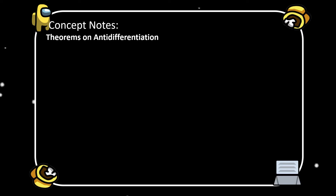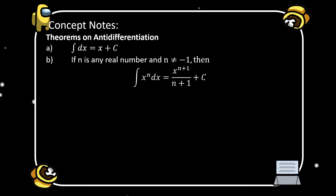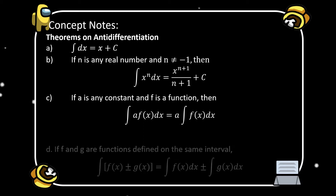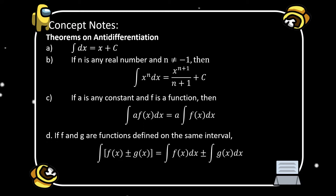We have here the concept notes: Theorems on Anti-differentiation. Theorem A: the integral of dx is equal to x plus C. Theorem B: if n is any real number and n is not equal to negative 1, then the integral of x raised to the power of n dx equals x to the power of n plus 1 over n plus 1, plus C. Theorem C: if A is any constant and F is a function, then the integral of A times f(x) dx equals A times the integral of f(x) dx. Theorem D: if f and g are functions defined on the same interval, then the integral of f(x) plus g(x) equals the integral of f(x) dx plus or minus the integral of g(x) dx.